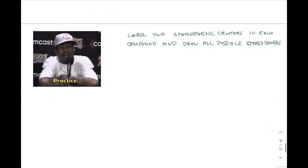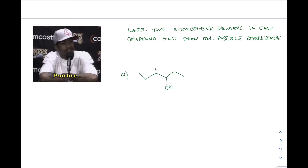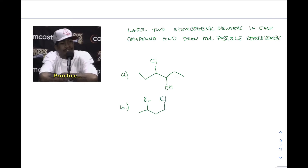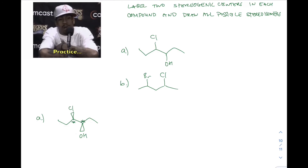Let's talk about practice. Label the two stereogenic centers in each compound and draw all possible stereoisomers. I'm going to give you compounds A and B — pause the video and try the problem on your own, then I'll run through it. For compound A, focus on atoms with heteroatoms like chlorine and oxygen, double-check for symmetry, and those are in fact the two stereogenic centers.